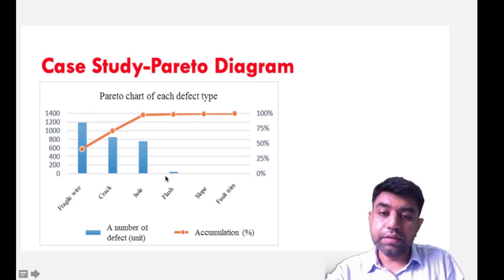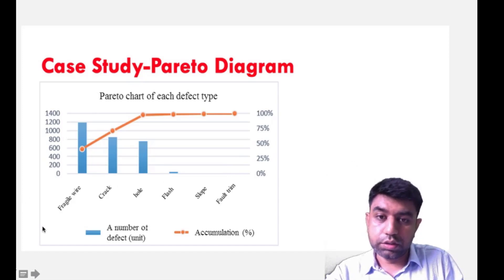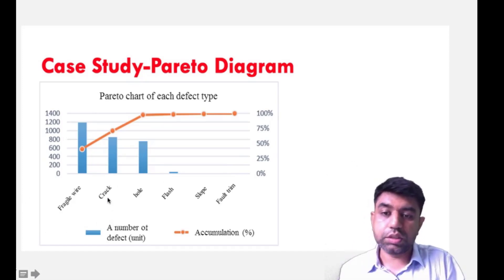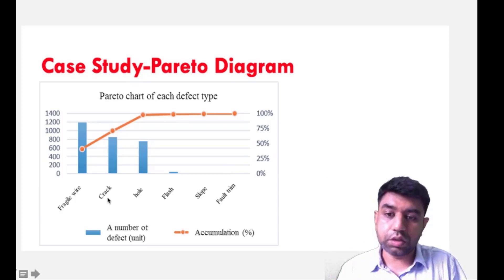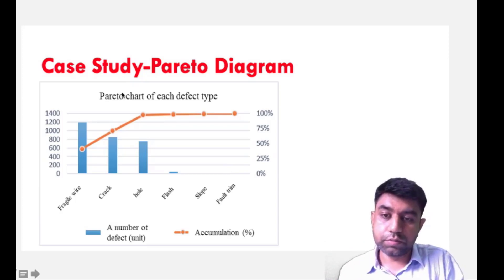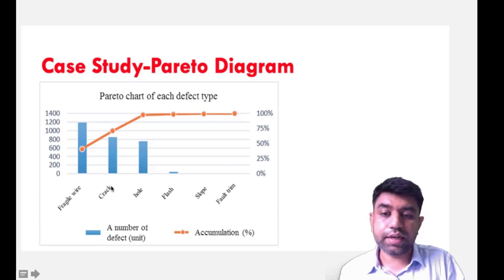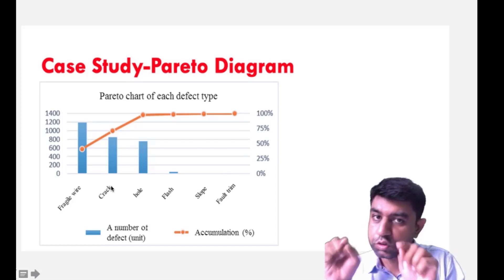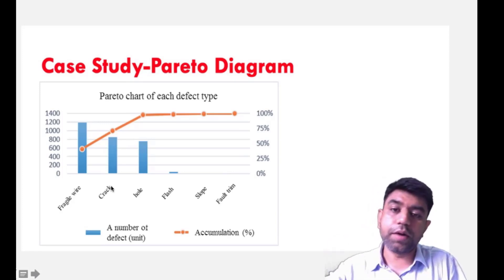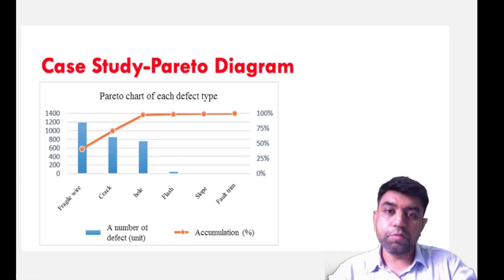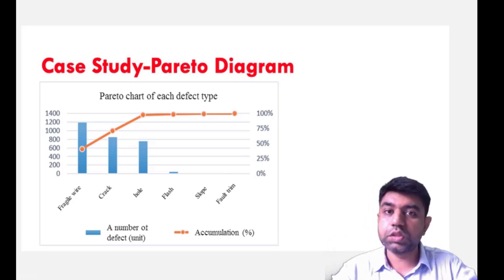The principle says: don't try to correct all different defects — focus on the 20% and you can improve a lot. From this representation, if we focus only on correcting the fragile wire and crack defects, we can improve quality substantially. That is the principle of Pareto.